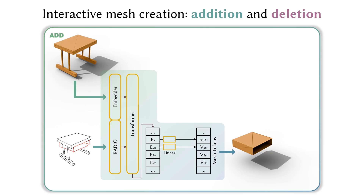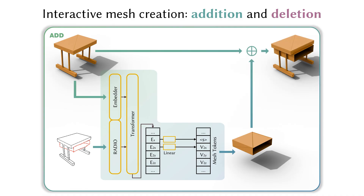We decompose mesh editing into two subtasks: addition and deletion. For mesh addition, we use a transformer to autoregressively generate triangles to be added. We then merge the input mesh with the generated mesh triangles to produce the final mesh output. We adopt a speculator aligned to vertex tokens during prediction, accelerating generation without sacrificing quality.